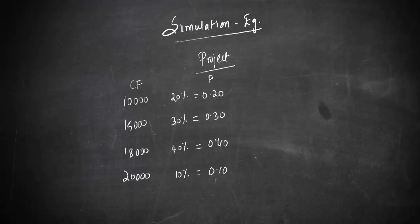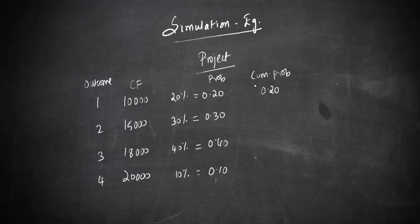Now you have the information on cash flows and their probabilities. To approach this through a simulation model, you need to develop what is known as cumulative probability. For each scenario you aggregate the probabilities: outcome one has cumulative probability 0.20, outcome two has 0.20 plus 0.30 which is 0.50, outcome three is 0.90, and outcome four is 1.0.